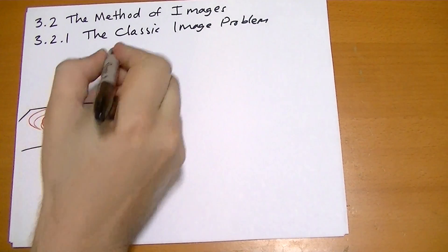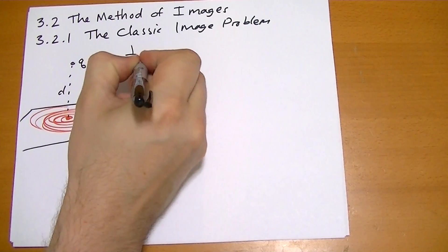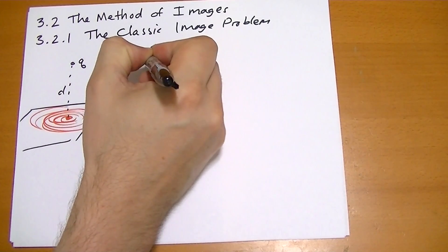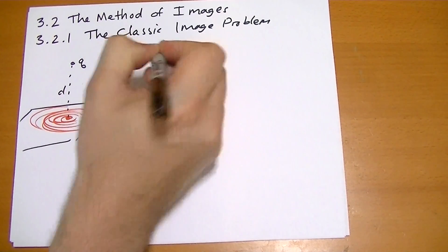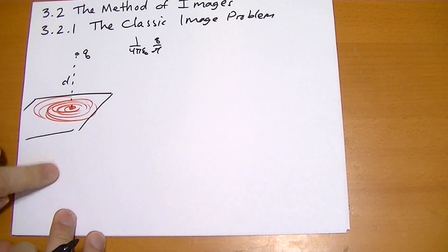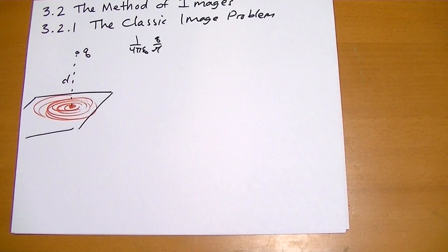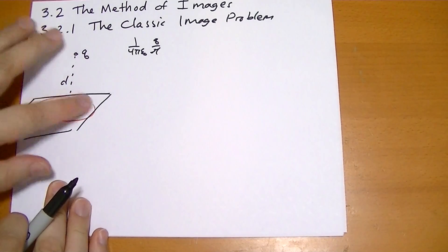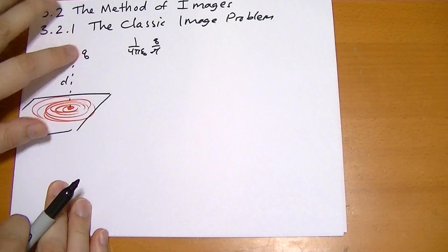We know it's not 1 over 4π epsilon naught, Q over R. Because that would create, below the plane, you'd still have a potential, you'd still have an electric field and stuff. So it's definitely not that. The total potential is due to whatever happens on this plane and this charge, of course.